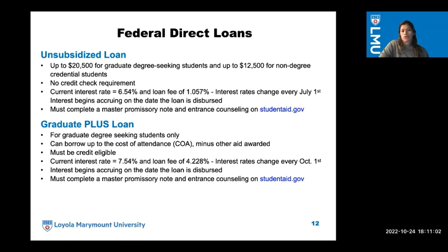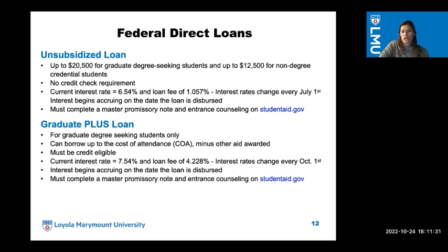Another loan is our Graduate Plus Loan, which is for graduate degree-seeking students only — compared to the unsubsidized loan, which is for both graduate-seeking and non-degree students. For the Graduate Plus Loan, you can borrow up to the cost of attendance minus other aid awarded. The federal government does run a credit check, so you have to be credit eligible. The current interest rate is 7.54% and the loan fee is 4.228%. Interest begins accruing on the date the loan is disbursed, and you have to complete a promissory note and entrance counseling on studentaid.gov.